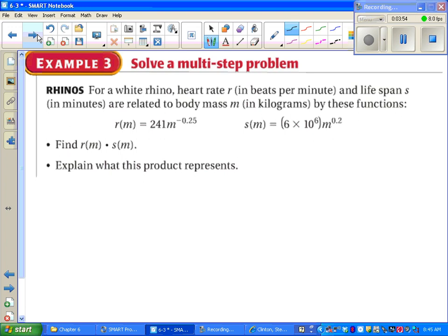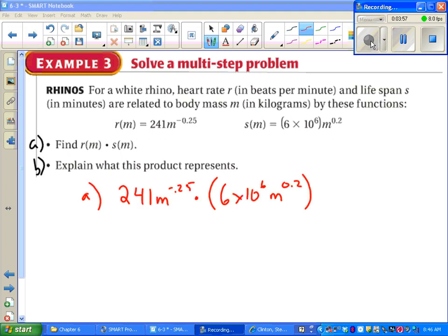Alright, go ahead and pause the video. Take a minute to read this over. See if you can set up the equation. Part a just says find R of M times S of M. R of M being the heart rate, S of M being the lifespan in minutes. So let's look at what this really means. Multiply these together. See what you get on your own.